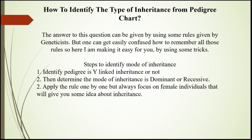Now, how to identify the type of inheritance from a pedigree chart? The answer can be given by using some rules provided by geneticists, but one can get easily confused and it is really time consuming in your exam when trying to apply every type of rule to each chart. To minimize that wasted time and to make things clear-cut, I have used some logic or tricks.